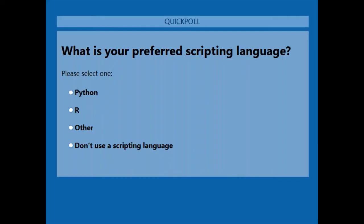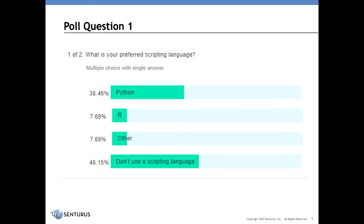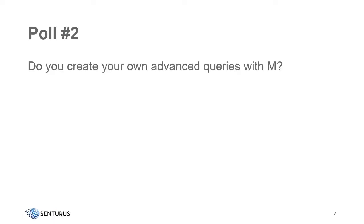As usual we like to put our finger on the pulse of our audience, so we have a couple of polls. Today's first question: what is your preferred scripting language? Options are Python, R, something else, or you don't use a scripting language. Results: Python at 38%, split 10% between R and others, and half of you don't use a scripting language. Python is a great way to get started with scripting, and Patrick will show you a great way to get started with Power BI.